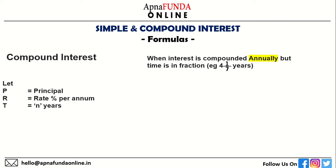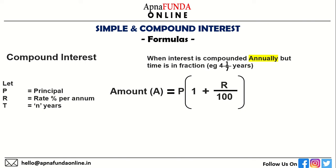This is a rare case but you should know this formula. When interest is compounded annually but time is in fraction — for example, 4 and 1/7 years — the amount is equal to principal into 1 plus R divided by 100 to the power of 4, into 1 plus one-seventh R divided by 100. Please note this formula.